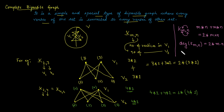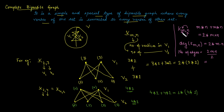To find the total number of edges, we use the handshaking theorem, which states that the number of edges equals the total degree of the graph divided by 2. Therefore, the total number of edges in a complete bipartite graph Km,n is M times N, where M is the number of vertices in V1 and N is the number of vertices in V2.